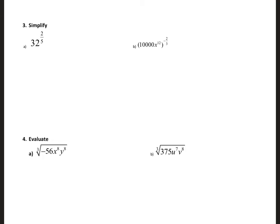Now we are told to simplify. This is the same as 2 raised to power 5, and I'm going to raise it to 2 over 5. The 5s cancel out, so we have 2 raised to power 2, which is equal to 4.